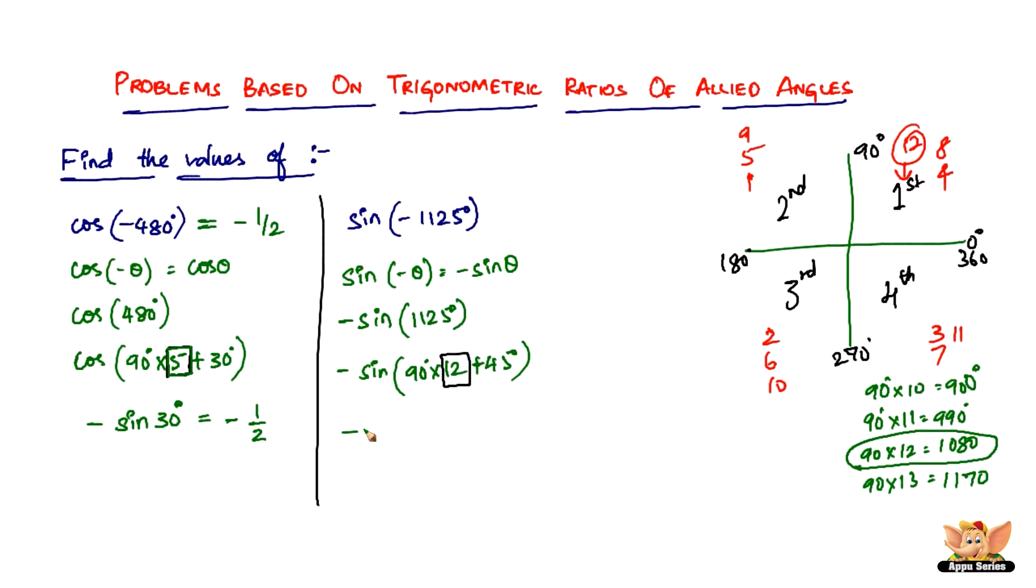The quadrant part helps us determine the sign. Now, how did I determine if it was sine? Because this number 12 is an even number, not an odd number. So sine is not going to change to cos, it's going to be just sine. Sine of 45 degrees is 1 by root 2, and minus sine of 45 degrees is minus 1 by root 2. Therefore, sine of minus 1,125 degrees is minus 1 by root 2.